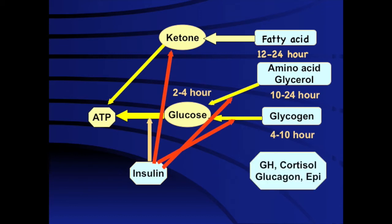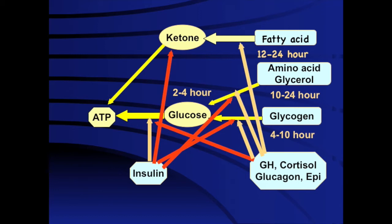On the other hand, we have four counter-regulatory hormones — growth hormone, cortisol, glucagon, and epinephrine — which antagonize insulin by increasing glycogenolysis, gluconeogenesis, lipolysis, and fatty acid oxidation. The body is actually trying to prevent hypoglycemia because hypoglycemia is far more dangerous than hyperglycemia. There are four hormones controlling hypoglycemia prevention while only one hormone causes hypoglycemia. In states of long fasting, this evolutionary advantage of four counter-regulatory hormones is very useful.